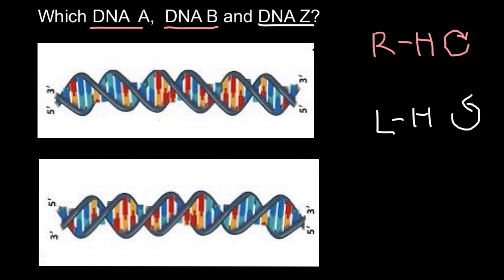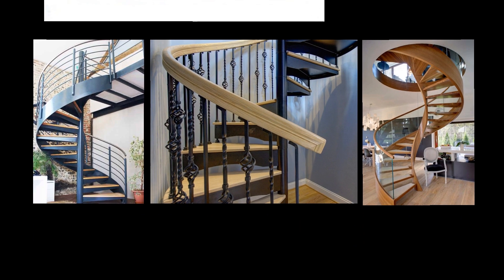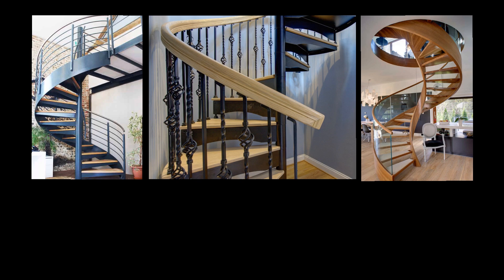If you're still confused and don't know how to solve this problem, these pictures are going to help me explain, and you'll be able to tell within just seconds which type of DNA is shown. If you take a look at the first picture, in order to go up this staircase we have to hold with our right hand, so this is a right-handed staircase. When we go down, we go in the clockwise direction.